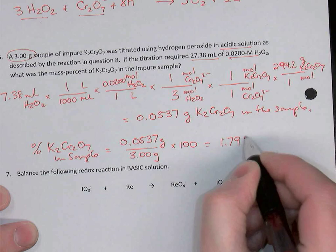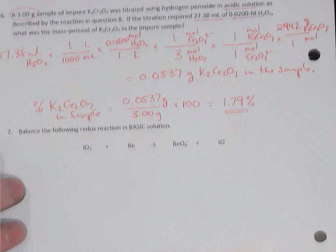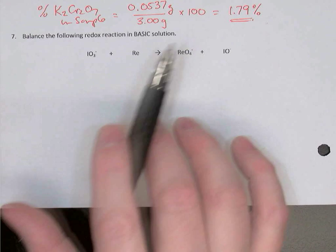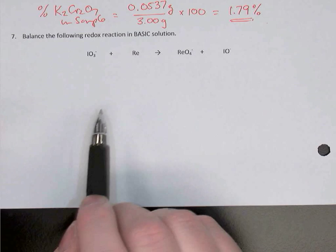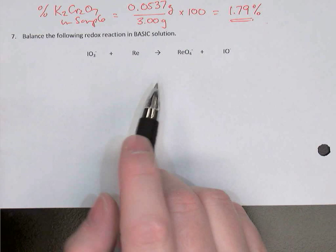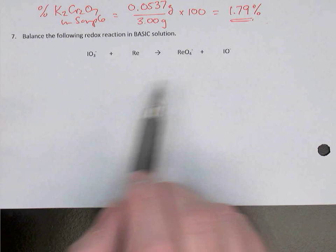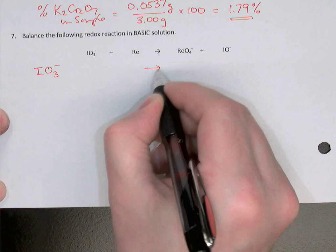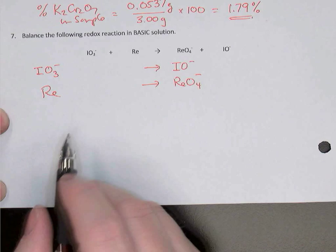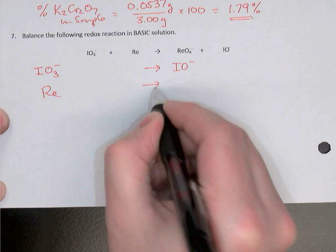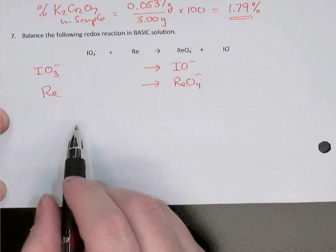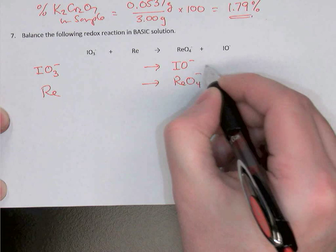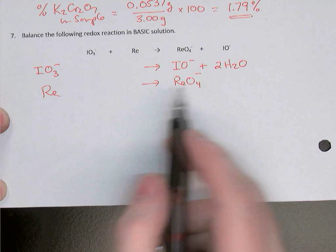The last question is a review of balancing in basic solution. When balancing in basic solution, we have to deal with hydroxide ions rather than hydrogen ions. Our strategy is to first balance in acid solution like we did in question five, then fix the hydrogen ion problem. Split into two half-reactions: IO3 minus becomes IO minus, and Re becomes ReO4 minus. Balance oxygens with water: two water molecules on the right of the first equation balances three oxygens on both sides; four water molecules on the left of the second equation balances four oxygens on both sides.